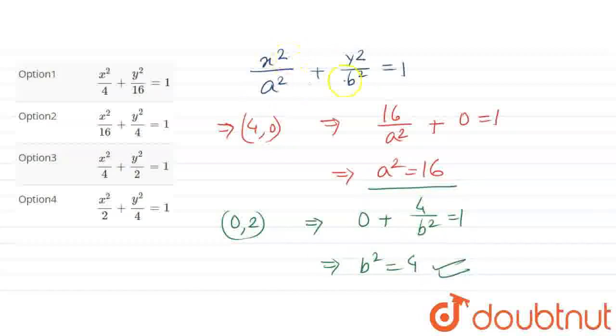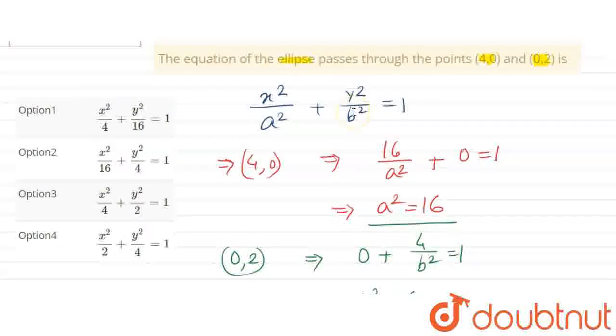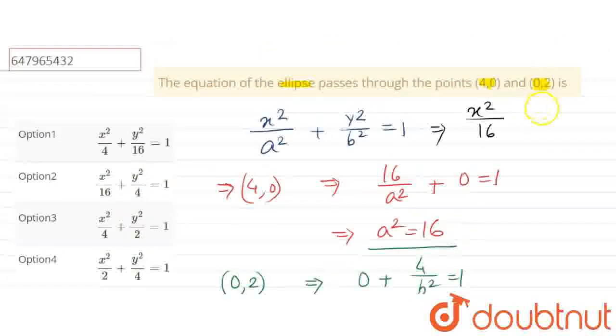Now we can substitute these values into the equation. We found a² = 16 and b² = 4. Placing these values gives us x²/16 + y²/4 = 1. We can simplify this by multiplying by 16.